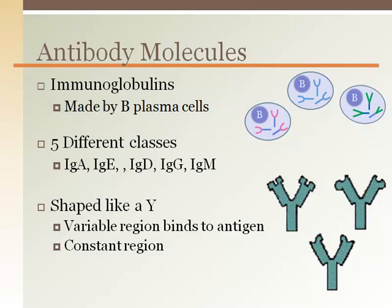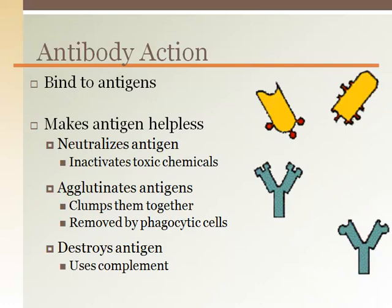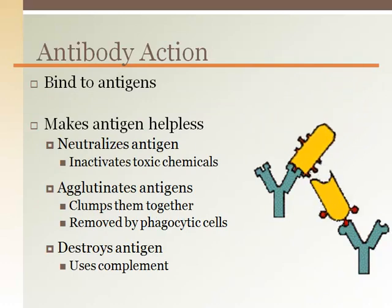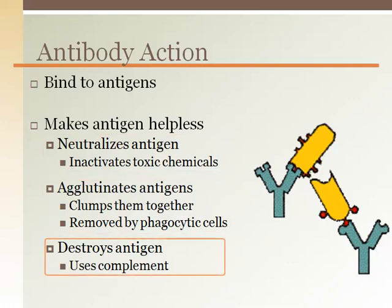There are two parts to an antibody: a variable region that is unique to the antigen it binds to, and a constant region that is the same for all antibodies. The binding sites on the variable portion of the antibody are each unique to a different antigen. The antibody binding site binds with its specific antigen like a lock and key. Once the antibody is bound to an antigen, the antigen is rendered helpless in a number of different ways — it is either immediately neutralized where its toxic chemicals are inactivated, the antigens are agglutinated or clumped together where phagocytes can consume and eliminate them, or it is completely destroyed using the complement chemical process.